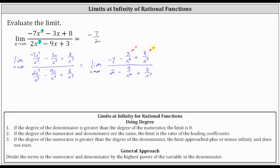In the denominator, two is not affected by x; minus nine divided by x to the sixth approaches zero as x approaches infinity; and three divided by x to the seventh approaches zero as x approaches infinity. So we're left with just negative seven divided by two, or once again the limit of negative seven halves.